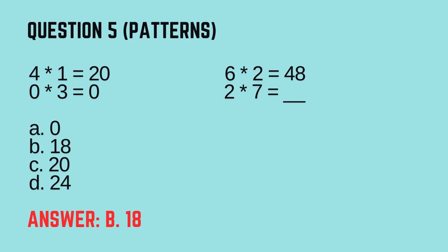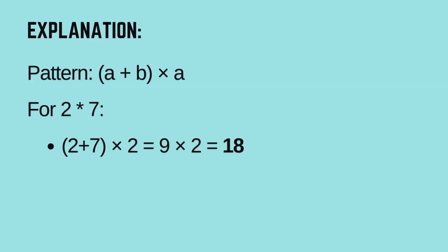The correct answer is B, 18. Let's learn how. The pattern is (a + b) × a. For 2 asterisk 7: (2 + 7) × 2 equals 9 × 2 equals 18. Try these.